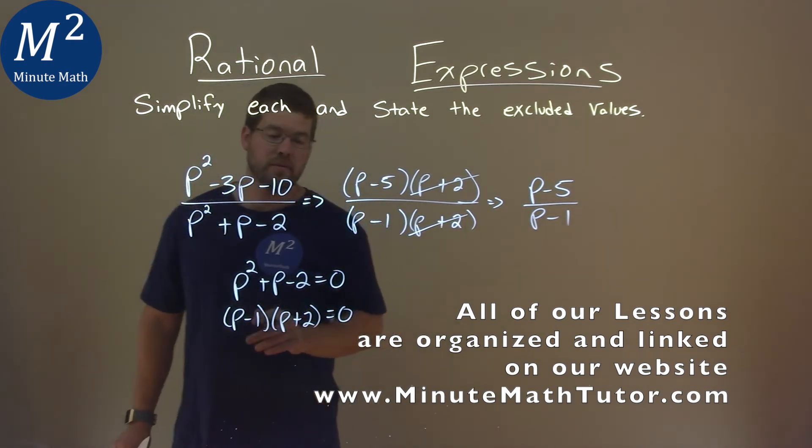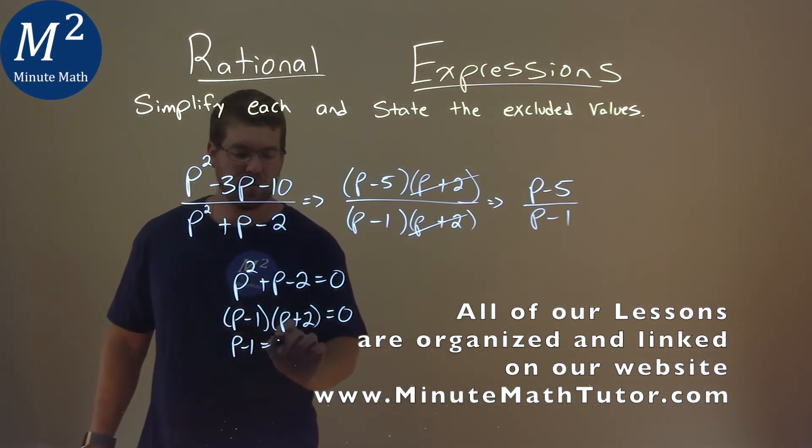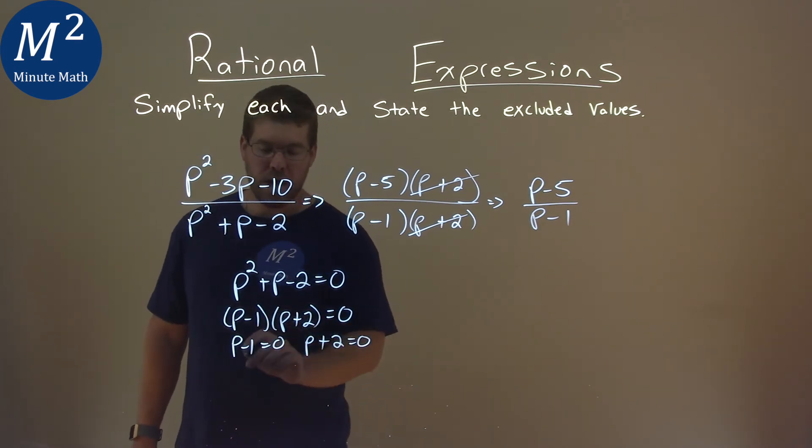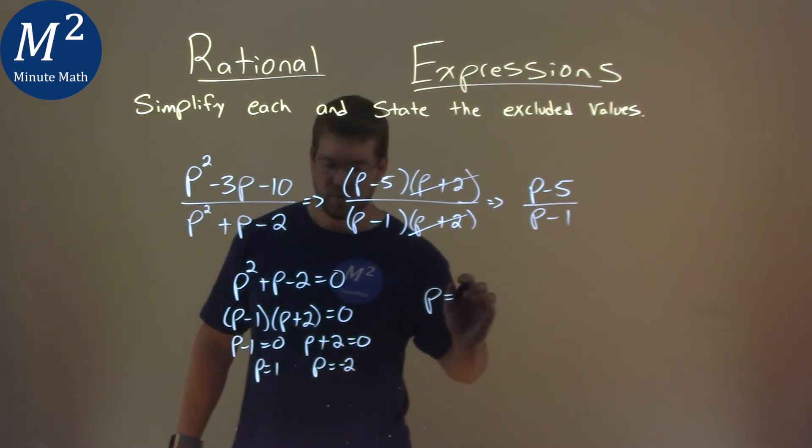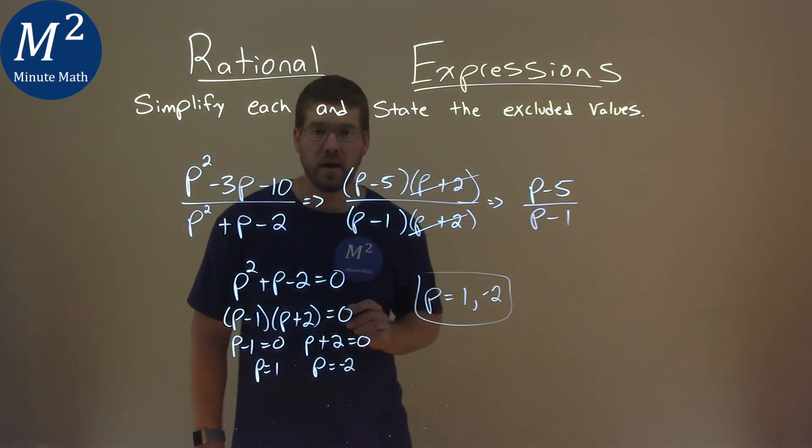And now what we have to do is set each part equal to 0 and solve. p minus 1 equals 0 and p plus 2 equals 0. Add 1 to both sides and p equals positive 1. Subtract 2 from both sides and p equals negative 2. And so our two values, 1 and negative 2, are our excluded values.